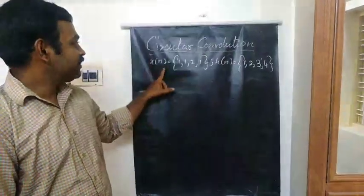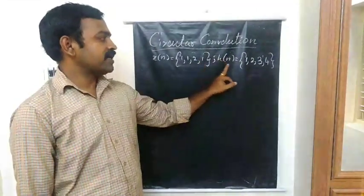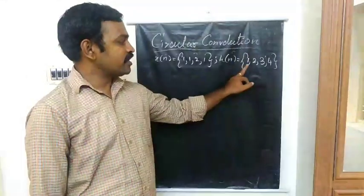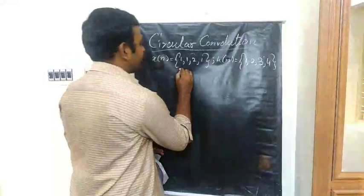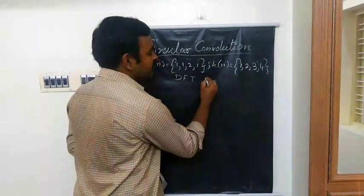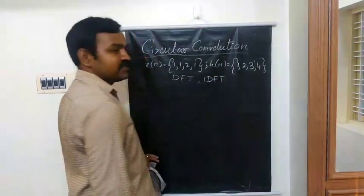So let us consider two sequences: X of n equals 1, 1, 2, 2, 1, as well as H of n equals 1, 2, 3, 4. So if we want to solve, we are taking Discrete Fourier Transform as well as Inverse Discrete Fourier Transform.